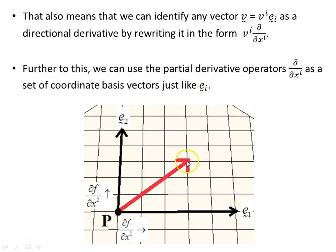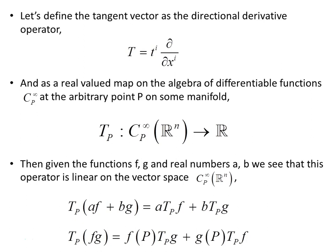We can use the partial derivative operators d/dxᵢ as a set of coordinate basis vectors, just like the eᵢ. Here's a vector in two-dimensional space from some point p with x and y components, with basis vectors in the x₁ and x₂ directions. We define the tangent vector as the directional derivative operator tⁱ(d/dxᵢ), and also define it as a real-valued map on the algebra of differentiable functions — the class C∞ — at the point p.